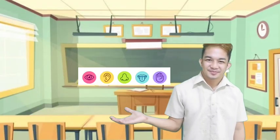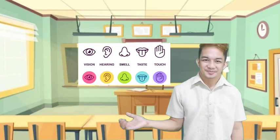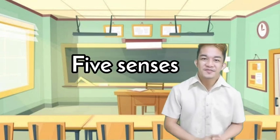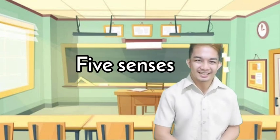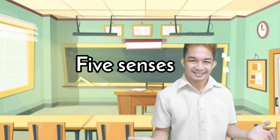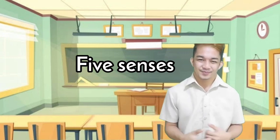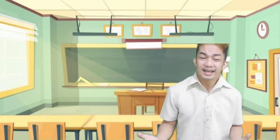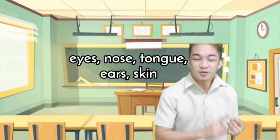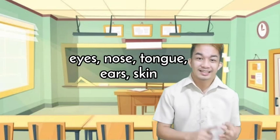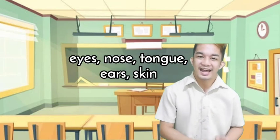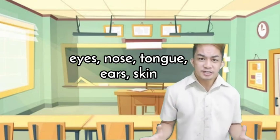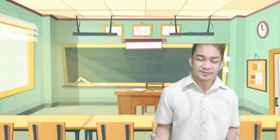Now kids, what is in the picture? The five senses of the human body. And what are they? They are the eyes, nose, tongue, ears, and skin. And what are the functions of each sense organ?